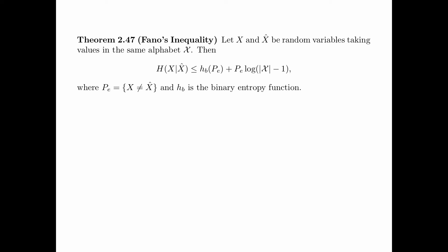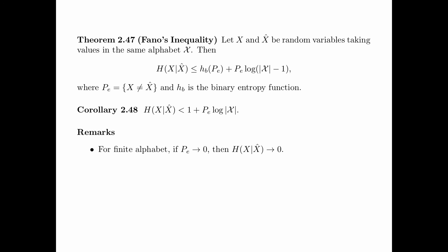We have just proved Fano's Inequality. Corollary 2.48 is a simplification, which says that the entropy of x given x-hat is less than 1 plus P_e times log of the size of the alphabet. This is obtained by further upper bounding H_B(P_e) by 1 and log of the size of the alphabet minus 1 by log of the size of the alphabet. Remark: for finite alphabet, if P_e tends to 0, then the entropy of x given x-hat also tends to 0. However, this may not hold for countably infinite alphabets — for small P_e, the entropy of x given x-hat may be large. Please see Example 2.49 in the textbook.